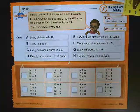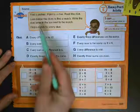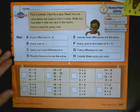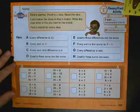Lesson today focuses on fluency practice. It says find a partner, point to a clue, read the clue, look below the clues to find a match, write the clue letter in the box, find a match for every clue.